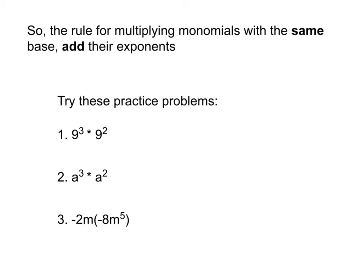If you noticed on the example problems, there is a rule for multiplying monomials. The rule would be if you have the same base, you add their exponents. So if the base is 9, you're going to add their exponents. If the base is a variable, as long as it's the same variable, the same letter, you're going to add their exponents. Try these practice problems in your notebook. Make sure practice problems go on the left hand side.